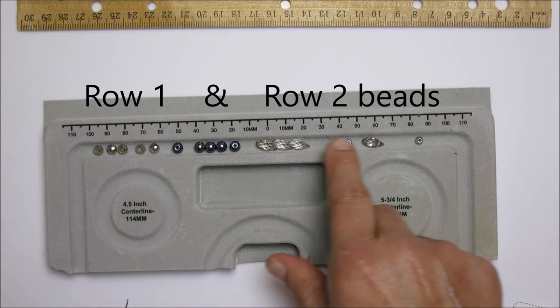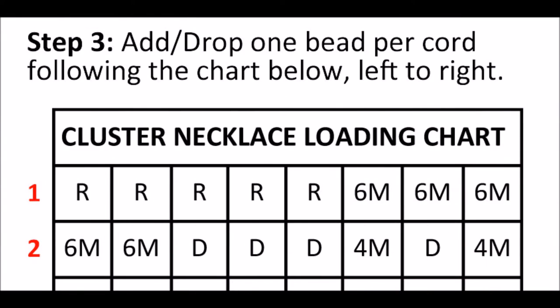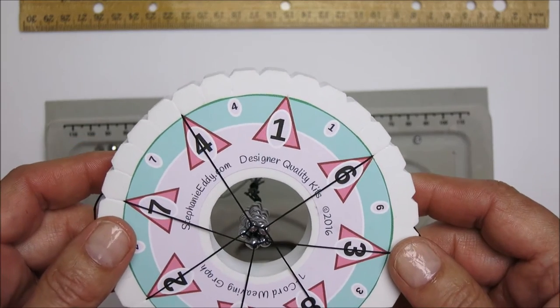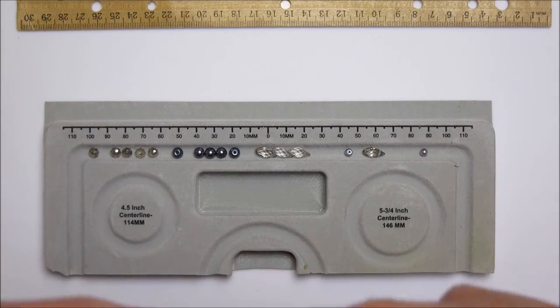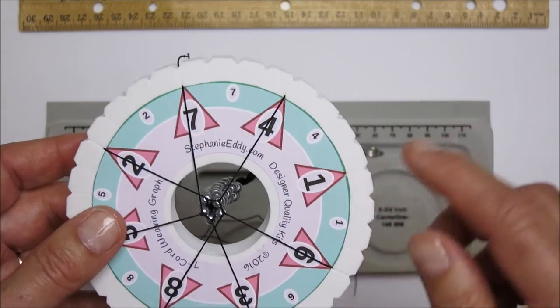So this is rows one and two that I've just combined together. When you're reading your pattern you're going to be working left to right across the pattern. Alright, so my next position open is number one.